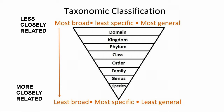We're going to do just three practice problems together. Remember, this is what you watched in the video — we're learning about taxonomic classification. This pyramid gives you the different levels of classification. As you're higher up, like in domain, you're going to be less closely related. As you go down to species, you're going to be more closely related.